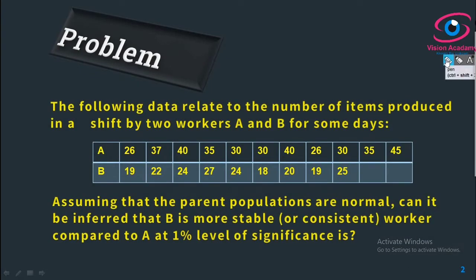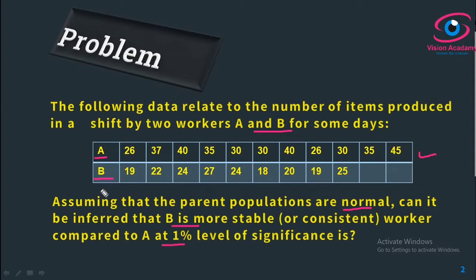This is the problem. The following data relate to the number of items produced in a shift by two workers A and B for some days. The worker-produced data are given — that is worker A and worker B data — assuming that the parent populations are normally distributed. Can it be inferred that B is more stable or consistent compared to A at 1% level of significance? We have nine days data for B and eleven days data for A.